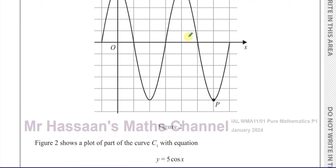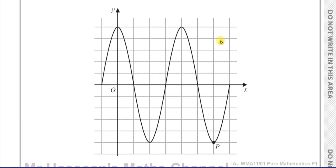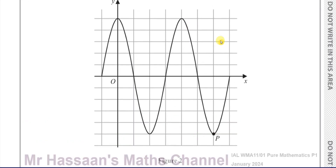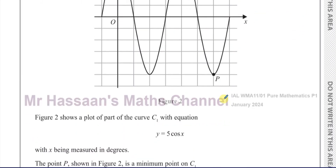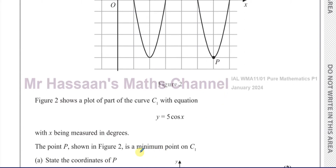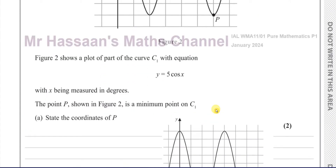Figure 2 shows the plot of part of the curve C1, which has equation y equals 5 cosine x — so it's like the cosine curve but multiplied by 5. With x measured in degrees, the point P shown is a minimum point on C1. We need to state the coordinates of P.